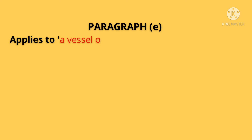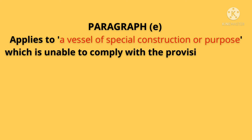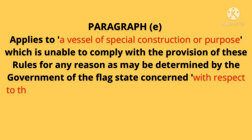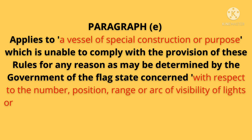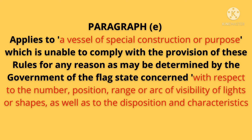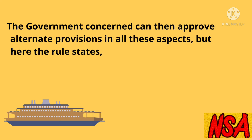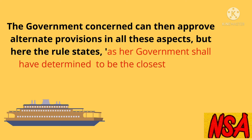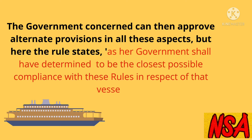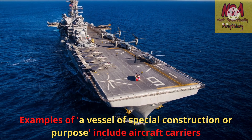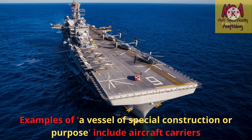Paragraph E applies to a vessel of special construction or purpose which is unable to comply with the provisions of these rules for any reason as may be determined by the government of the flag state concerned, with respect to the number, position, range, or arc of visibility of lights or shapes, as well as to the disposition and characteristics of sound signaling appliances. The government concerned can then approve alternate provisions in all these aspects, but the rule states these must be the closest possible compliance with these rules in respect of that vessel. Examples of a vessel of special construction or purpose include aircraft carriers — their side lights may be on the sides of the small superstructure, which itself is situated on one side to allow for the large flight deck.